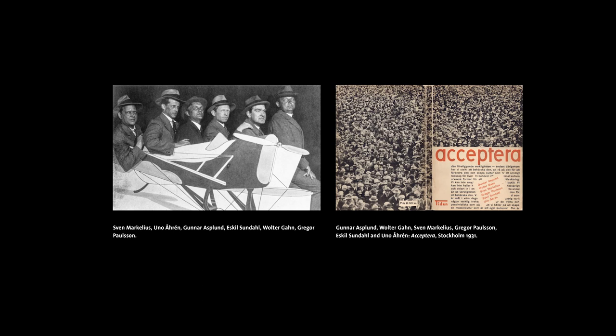There was criticism that the exhibition was un-Swedish, or like American advertising, or like German functional architecture — and there is a certain kernel of truth in all of this criticism. They apparently already in the summer or autumn of 1930 start to plan the book. Although the exact writing process is not very well documented, we know there were some preliminary meetings. Apparently Gregor Paulson and Gunnar Asplund took the initiative to write this manifesto, and they invited four other architects involved with the exhibition to join them.